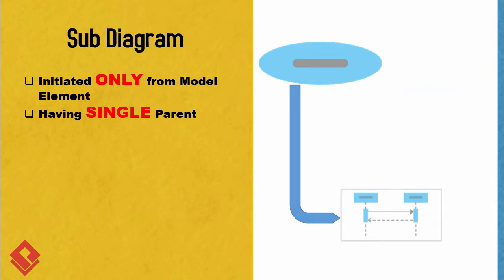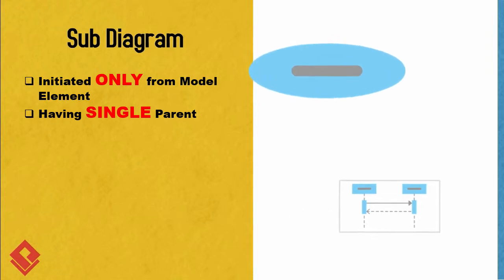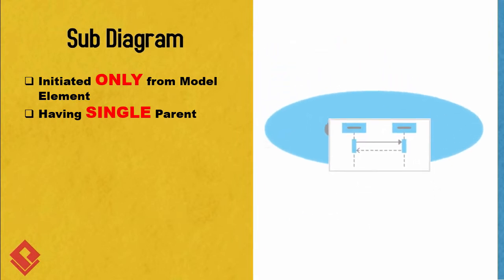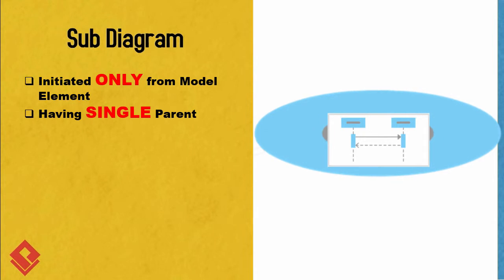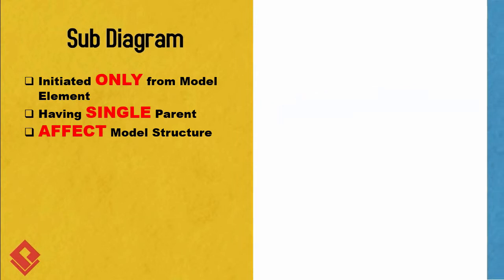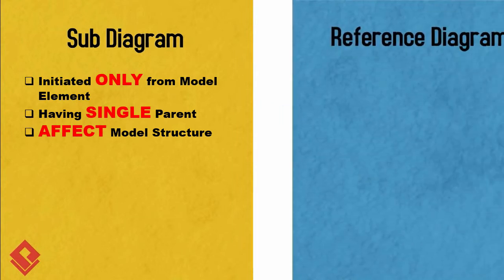Since subdiagram is a kind of parent and child relationship, all the model elements you create inside the subdiagram become children of the source model element. That means assigning a diagram to become a subdiagram would affect your existing model structure.